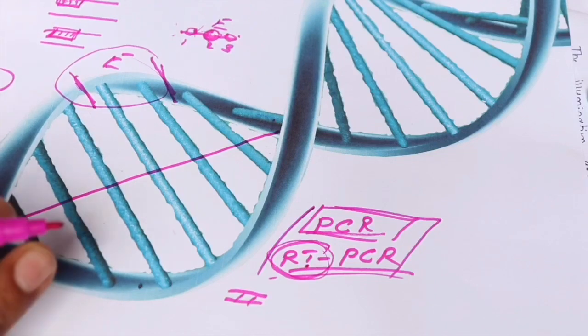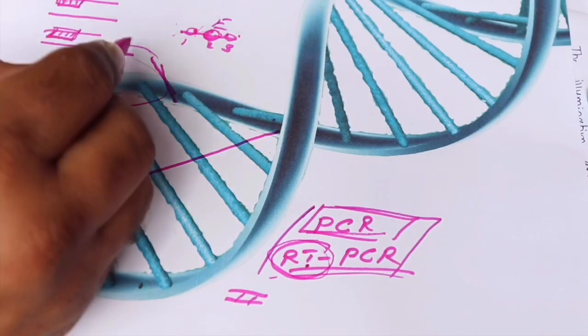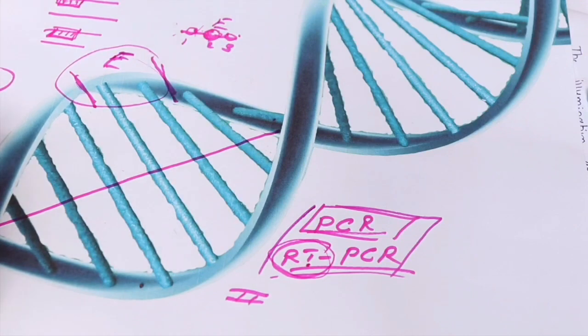at that time it will become easier to identify whether we have that E protein in this given sample or not. So that is the polymerase chain reaction.